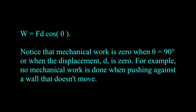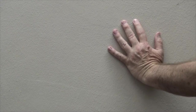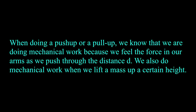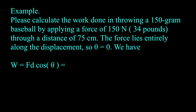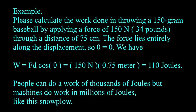Mechanical work is zero when theta equals 90 degrees, or when the displacement d is zero. For example, no mechanical work is done when applying a force against a wall that does not move. When doing a push-up or a pull-up, we are doing mechanical work because we feel the force in our arms as we push through the distance d. Please calculate the work done in throwing a 150 gram baseball by applying a force of 150 newtons (34 pounds) through a distance of 75 centimeters. The force lies entirely along the displacement, so theta equals zero. We have W equals Fd cosine theta equals 150 newtons times 0.75 meters equals 110 joules.